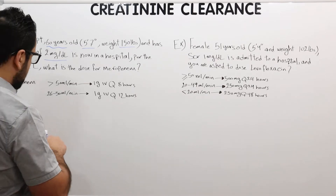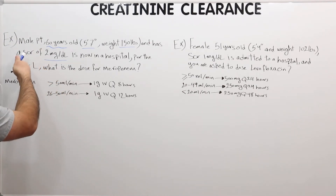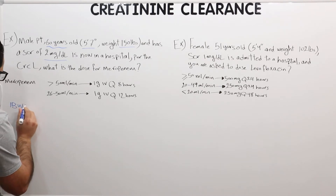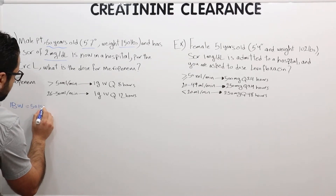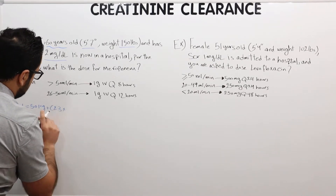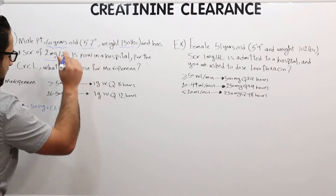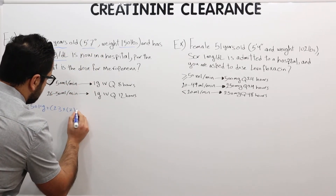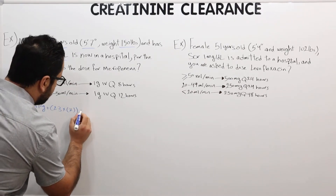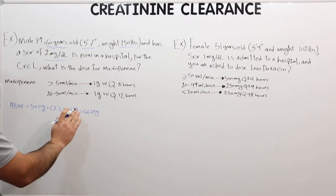Step one is to calculate the ideal body weight. Because this is a male patient, the ideal body weight equation is 50 kg plus 2.3 times the number of inches above 5 feet. We have 7 inches above 5 feet, so 2.3 times 7 is 16.1, plus 50 gives us 66.1 kilograms — this is the ideal body weight.